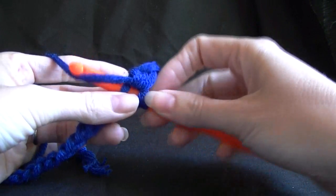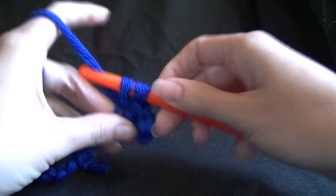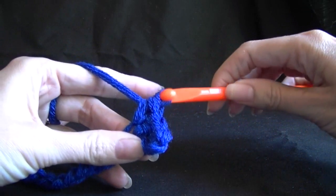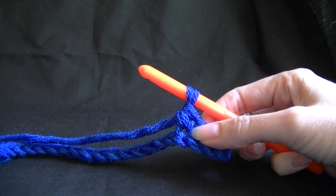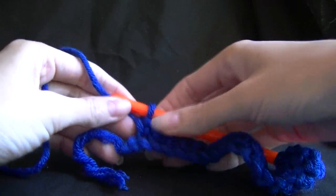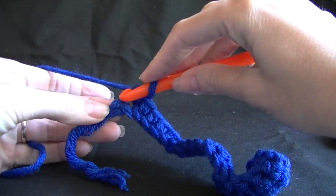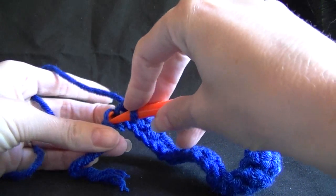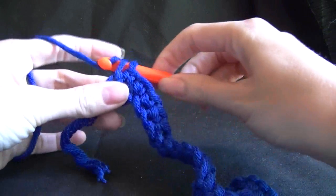Into the stitch, yarn over, pulling up a loop. We have 2 on our hook, yarn over, pulling through 2. Repeat this all the way to the end of our chain. I'm now coming up to the last stitch of my chain, so going into the last chain and making our single crochet.